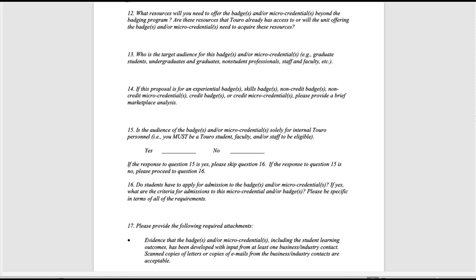Question 15 asks whether the audience for your badge or micro-credential consists of people already part of the Toro system — for example, people who would already have a Toro 1 ID. If the answer to question 15 is yes, you do not have to answer question 16. However, if the answer is no, question 16 asks what criteria you will use for admitting learners to this badge or micro-credential. The last question in part one asks you to provide evidence that you have consulted with or partnered with at least one individual outside of the Toro University community — ideally someone in the field you are hoping to target for this badge or micro-credential learning opportunity.